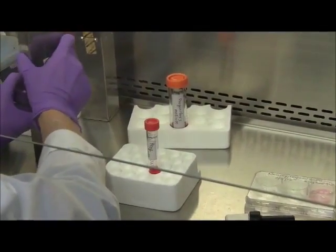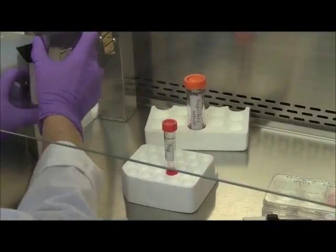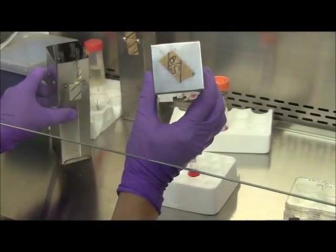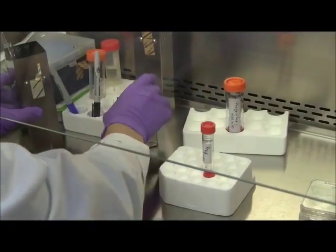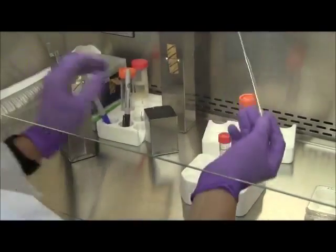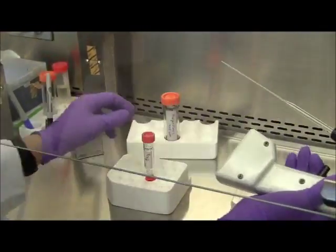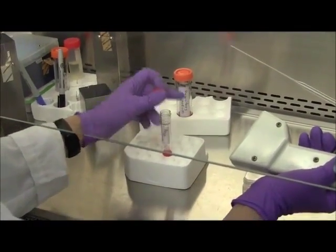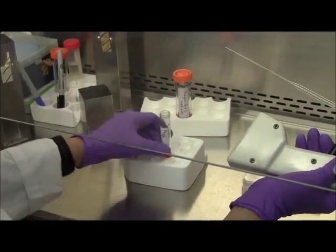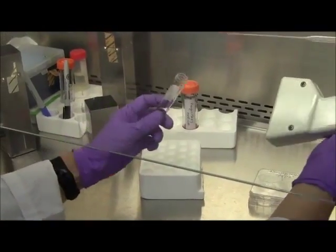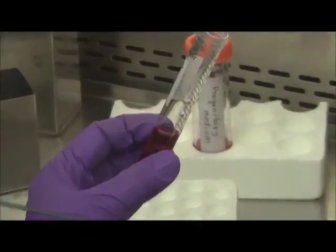Obtain a sterile, fire-polished borosilicate pasteur pipette and triturate cell suspension. Intake cells from the very bottom of the tube to collect large cell clusters and dispense medium with cells at the level above solution.